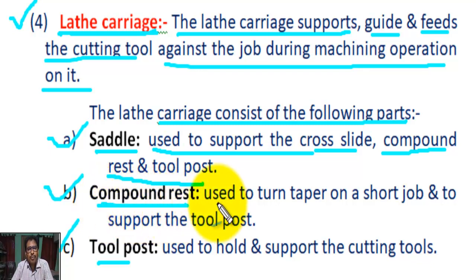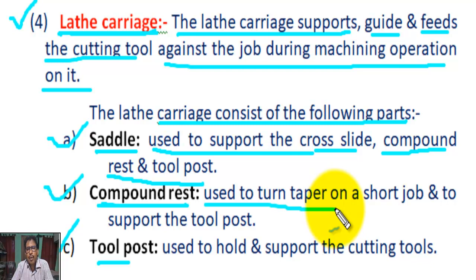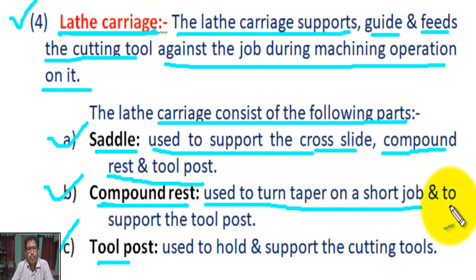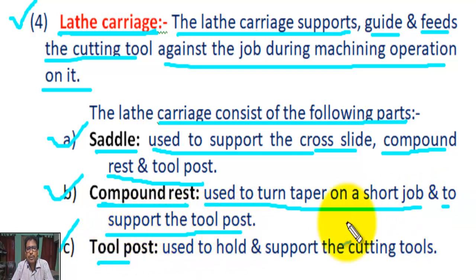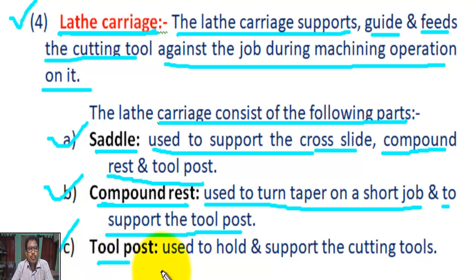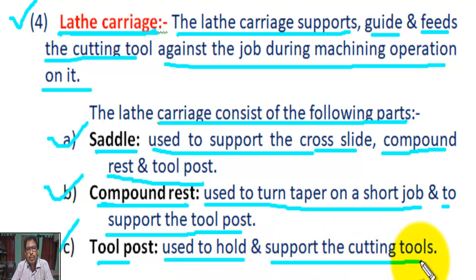B: Compound rest. The function of the compound rest is: to turn a taper on a short job, and to support the tool post. C: Tool post. The function of the tool post is to hold and support the cutting tool.